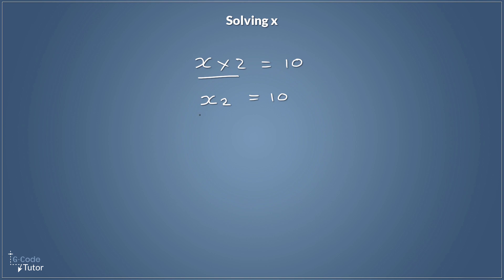It's the same as before — we do the opposite operation. So for x times 2 we divide this side by 2, and that's how we get x on its own. Whatever we do to one side we do to the other, so we divide 10 by 2 as well. The multiplication and division cancel each other out, because x times 2 divided by 2 is just x. So x equals 10 divided by 2, which equals 5. We can go back to our original equation, substitute x with 5, and confirm: 5 times 2 does in fact equal 10.